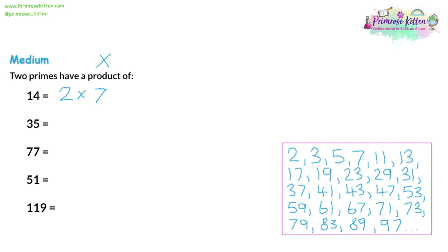For question 2, we can see 35 is not even, so we can't divide by 2. But it ends in a 5, and any number ending in 5 or 0 can be divided by 5, which is a prime number. 35 divided by 5 is 7, so 5 times 7 — both prime numbers — gives a product of 35. For question 3, 77 is not even and doesn't end in 5 or 0, but it has repeating digits. A two-digit number with repeating digits can be divided by 11, which is prime. 77 divided by 11 is 7, also prime. So 11 times 7 is 77.